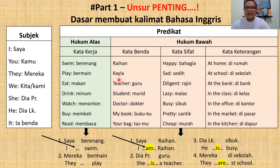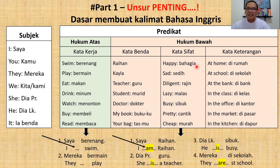Kemudian kata benda. Kata benda itu apa? Nama-nama, termasuk nama orang — itu juga kata benda. Contoh: Rehan, Kayla. Kemudian profesi juga termasuk kata benda: ada teacher, ada student, ada doctor. Atau benda-benda di sekeliling kita, contoh: my book, your bag. Kemudian kata sifat — ada perasaan, ada warna, ada ukuran. Contoh: happy (bahagia).